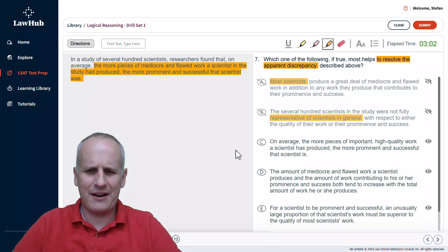Then, choice C, on average, the more pieces of important high-quality work a scientist has produced, the more prominent and successful that scientist is. Well, this sounds like a viable statement, but our paradox, our discrepancy that we're supposed to resolve, doesn't even mention important high-quality work. So, we can eliminate choice C for that reason because it doesn't explain the discrepancy even though it makes sense.